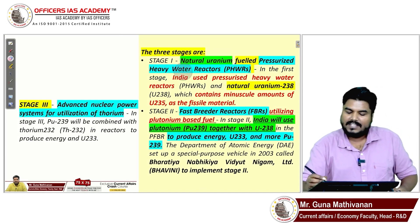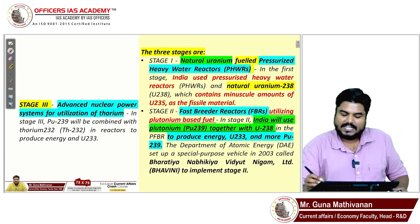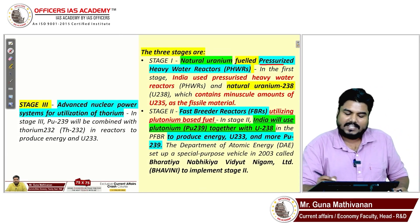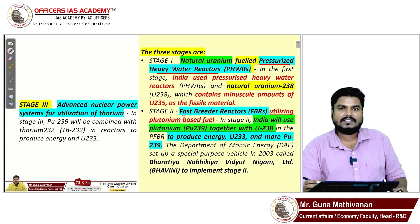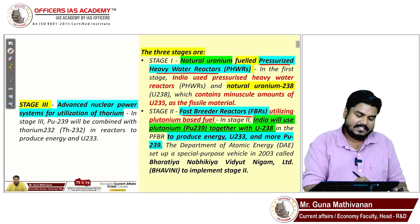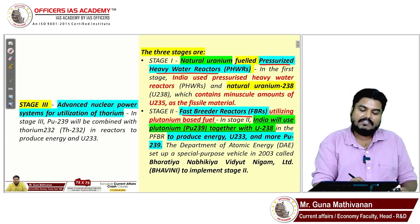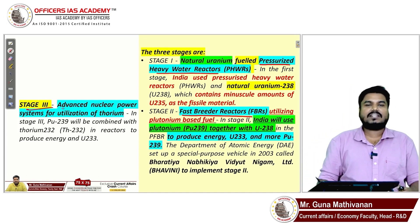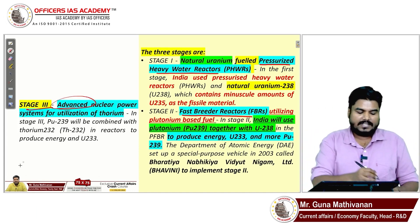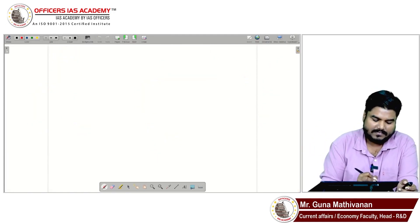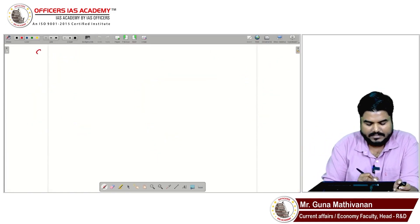The three-stage program starts with Stage 1: Pressurized Heavy Water Reactor. Stage 2 is the Fast Breeder Reactor. Stage 3 is the Advanced Heavy Water Reactor. Let me explain each stage one by one.